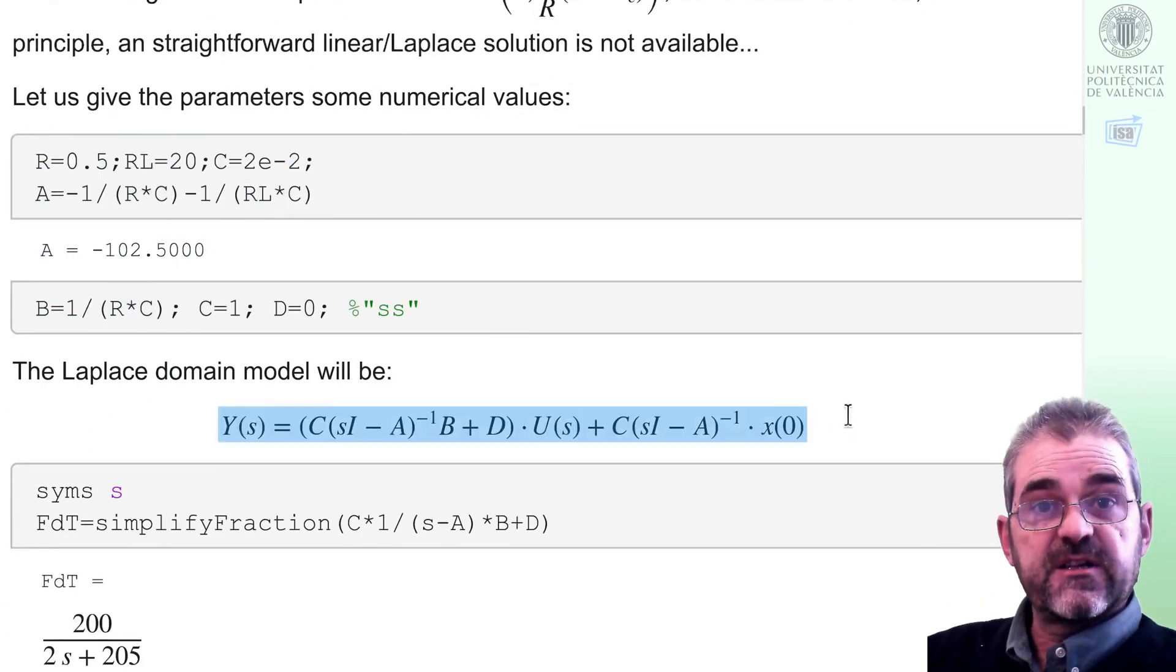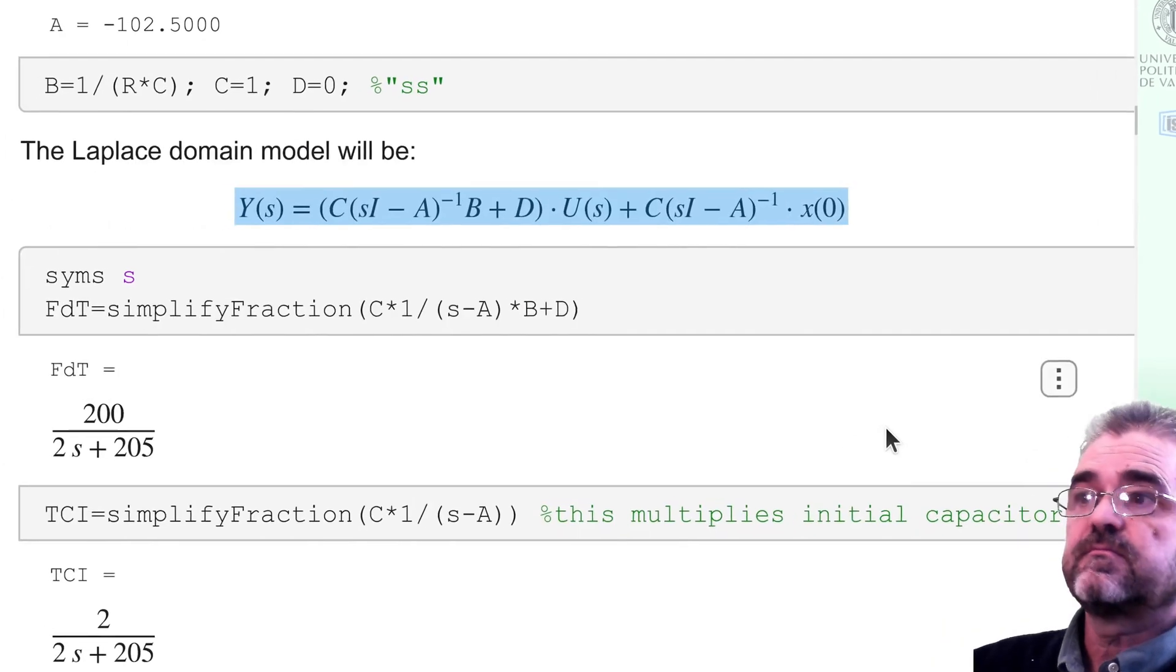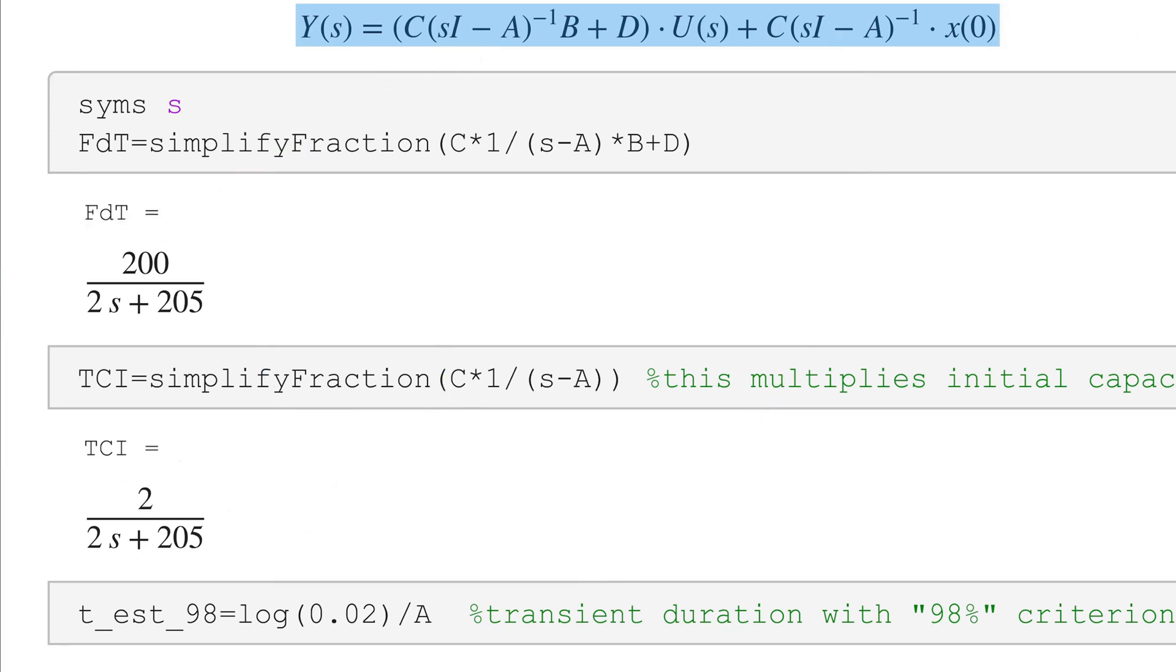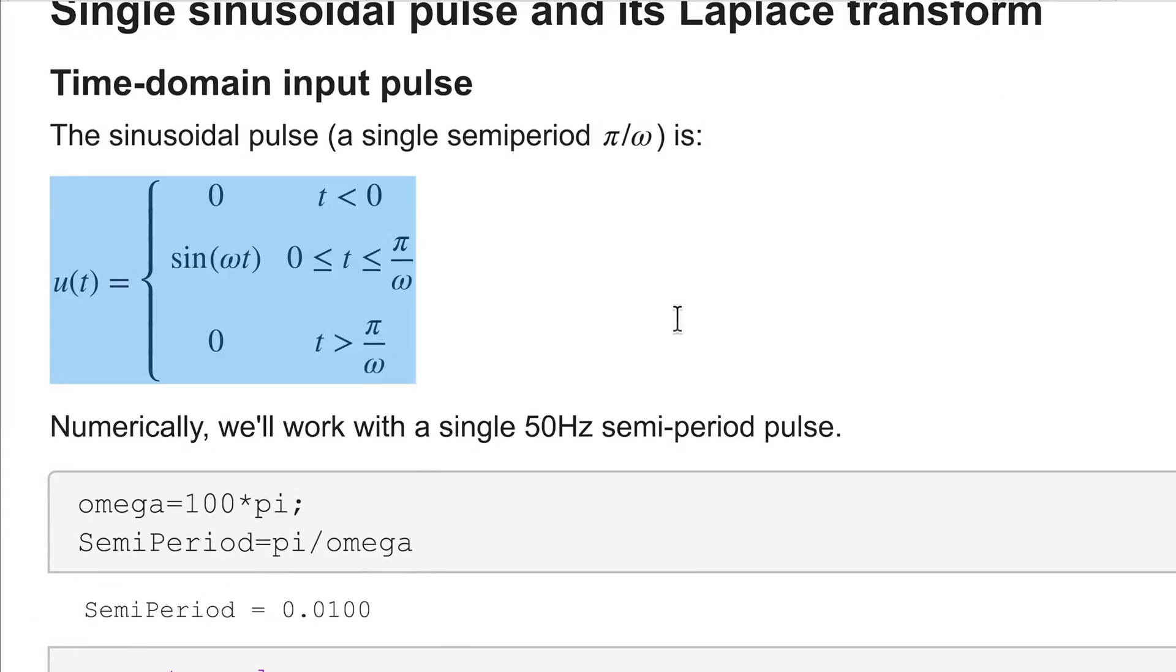And taking Laplace transform, we can obtain a model. In this way some transfer function times the Laplace transform of the input plus some initial condition term from the state space matrices. So it's now the time to use that model to obtain the time response when the input is a sinusoidal pulse.